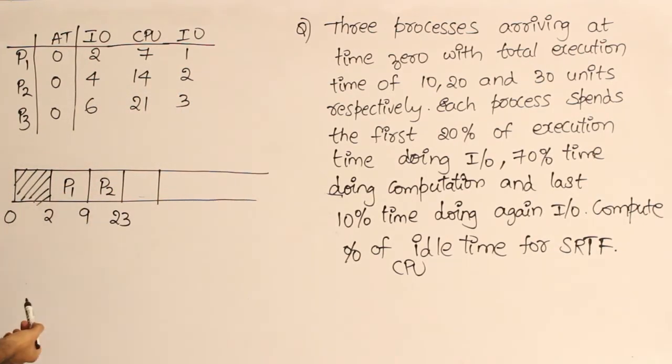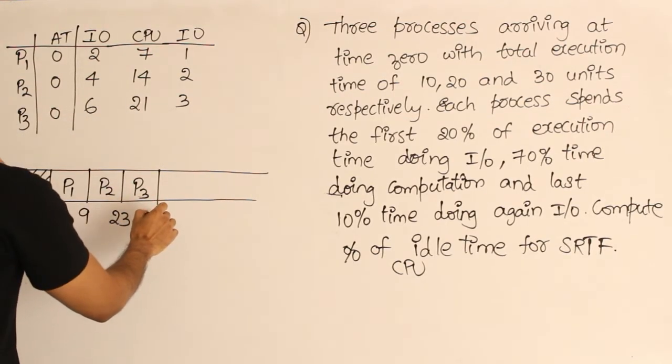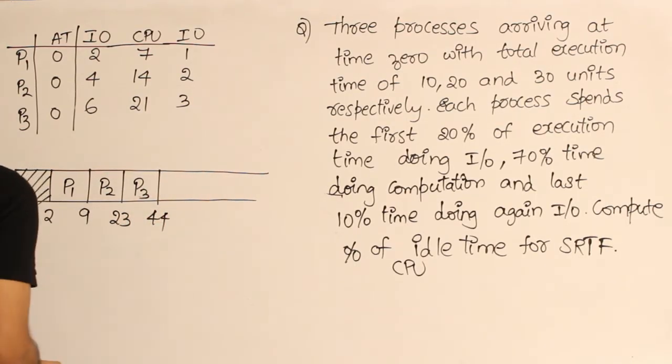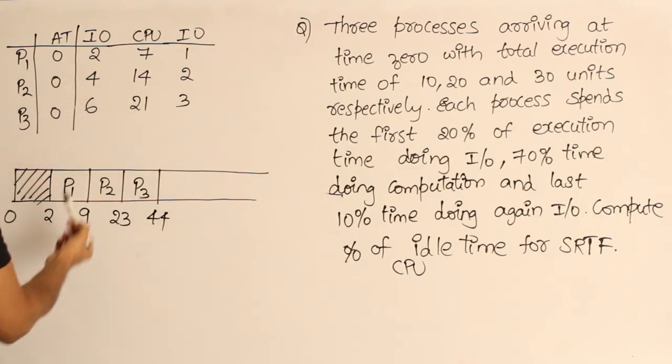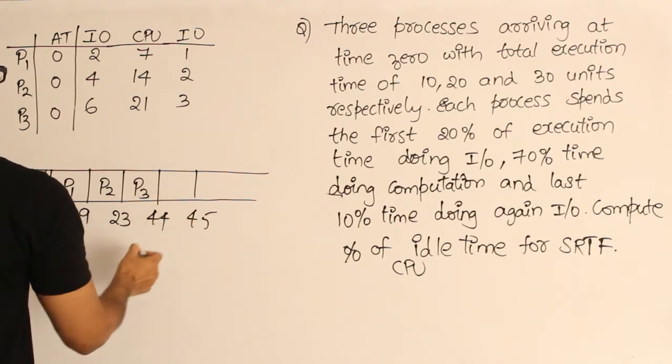Till 23 units it will run. P2 is also over and then it will go for I/O. I/O will take 2 units, no problem. Next I have to schedule P3. P3 will run for initially 21 units, so 23 plus 21 is 44. Till 44, P3 is going to run, and then it will go for I/O for 3, which means till 45.